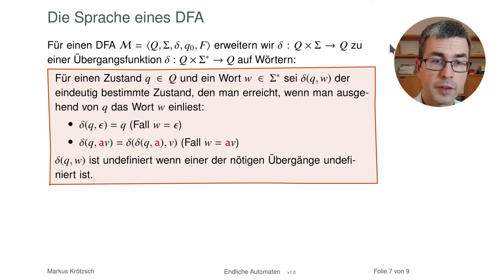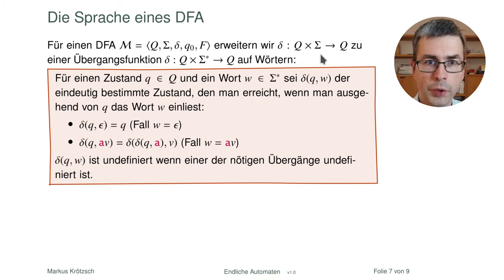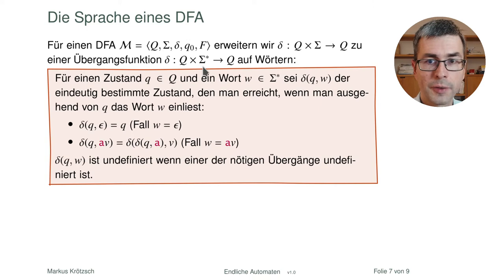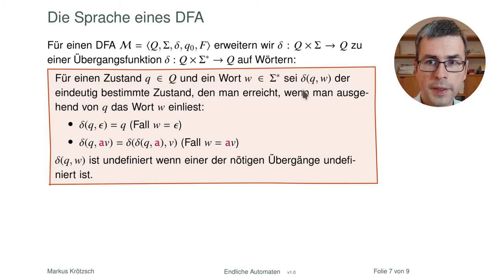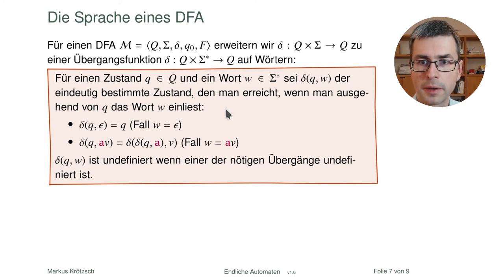Wir wollen definieren, welche Sprache ein Automat erkennt. Die Intuition ist, dass es die Sprache aller Wörter ist, die der Automat akzeptiert. Um das genau zu definieren, erweitern wir zunächst die Übergangsfunktion δ — die nur auf Zuständen und einzelnen Symbolen definiert war — zu einer Übergangsfunktion δ*, die auf Zuständen und ganzen Wörtern definiert ist. Die Idee: δ*(q, w) ist der eindeutig bestimmte Zustand, den man erreicht, wenn man ausgehend von q das Wort w einliest.